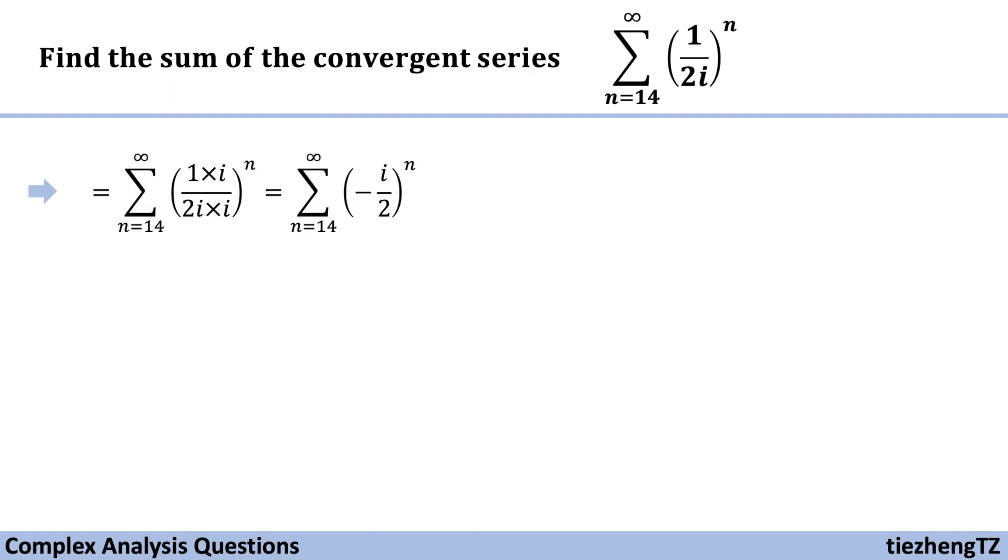Normalize this 1 over 2i by multiplying i in both denominator and numerator parts, so we have sum n starts from 14 to infinity of minus half i to the power of n. This is a very familiar format.